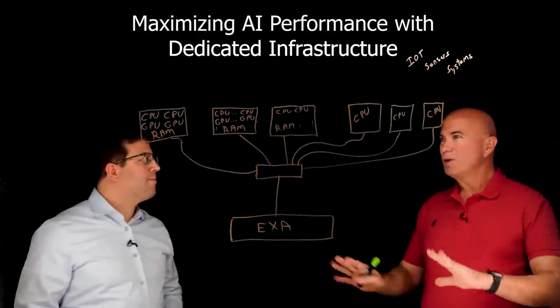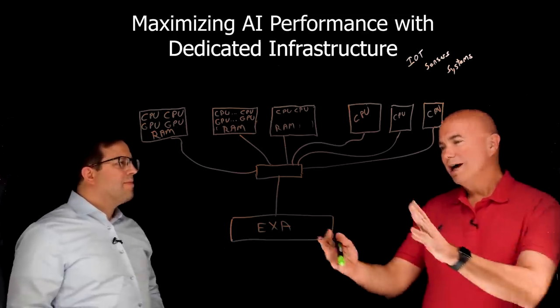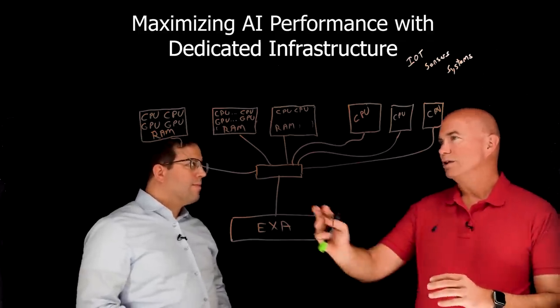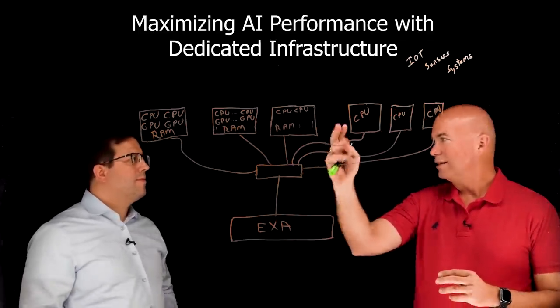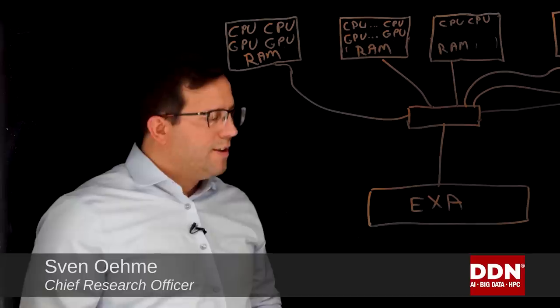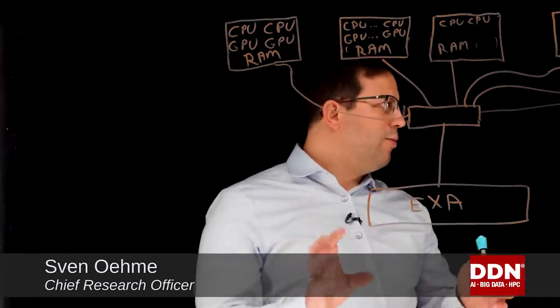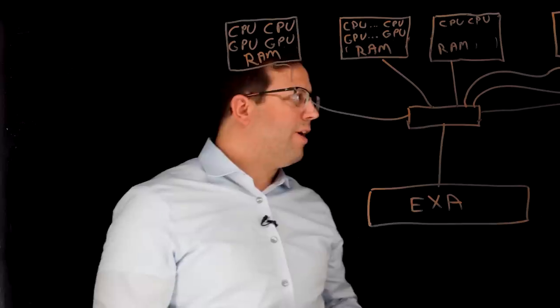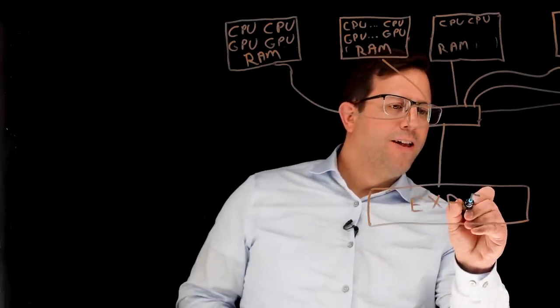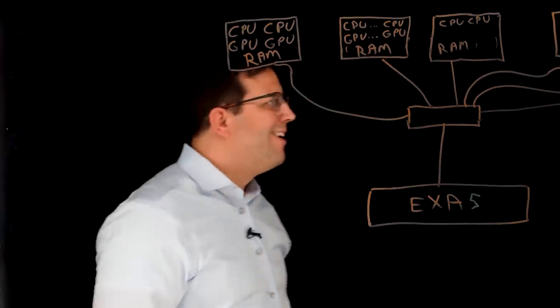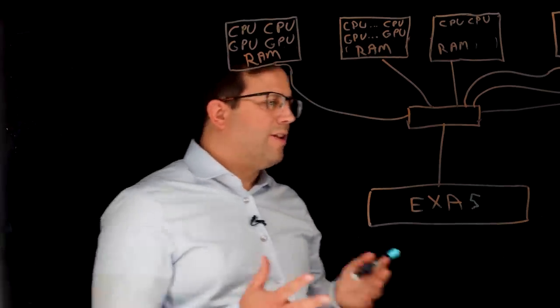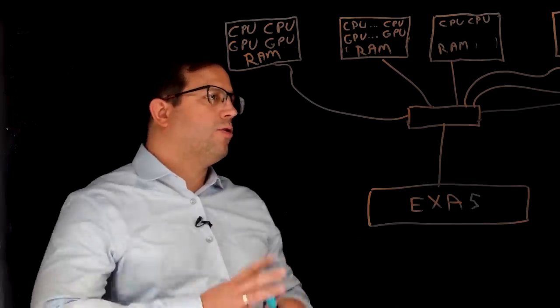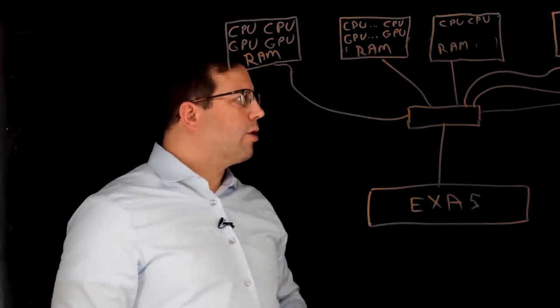So EXA is a scale-out file system with parallel access, where we install a small client on anything that needs to access the data directly, right? The product itself is called EXA Scalar, which is the hardware that runs EXA 5, which is the current version number 5 of the file system. EXA 5 is a distributed scalable file system developed and supported by DDN to support massive parallel workloads.